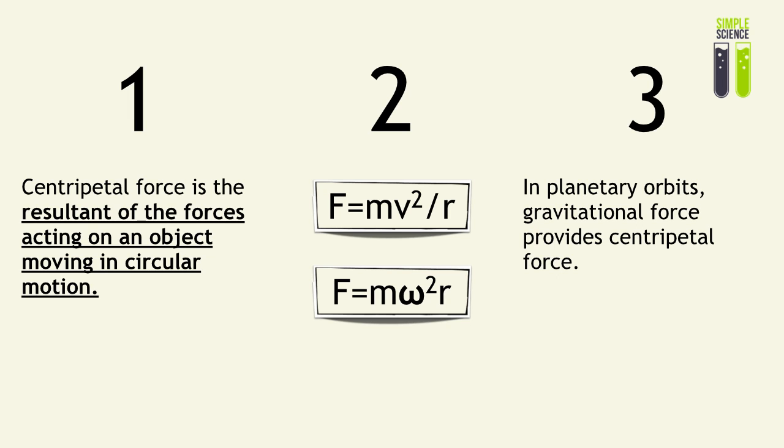The first one is that centripetal force is the resultant forces acting on an object that is moving in circular motion. Remember, it's the resultant and it's not necessarily a single force, except when it's just the tension of the string moving in perfectly horizontal circular motion. Point number two is that when we combine the idea of resultant force and the centripetal acceleration which we have derived, we have two essential equations that describe circular motion. And number three, in commonly tested questions that involve planetary orbits, the gravitational force provides the centripetal force.